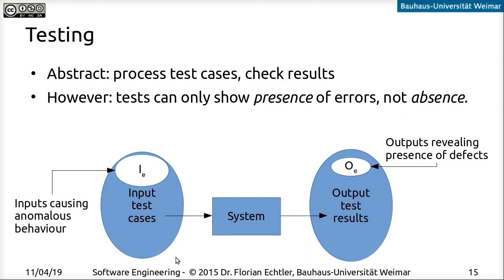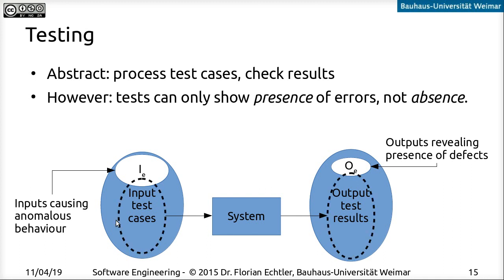It just means that your tests have not found any errors. Let me try to illustrate this. If we have a system and here in blue the set of all possible test cases, then even for a really simple system — say a method that only takes in one 32-bit integer and outputs one 32-bit integer — the set of all input test cases is already all possible 32-bit numbers, something like four billion possible test cases. We will never be able to test all possible test cases; we can only ever test a subset.